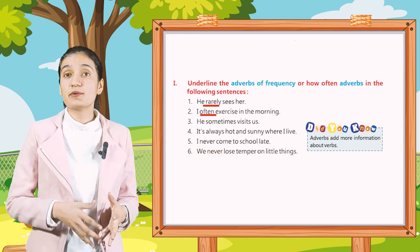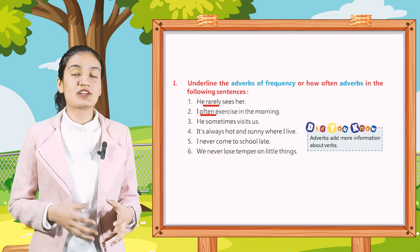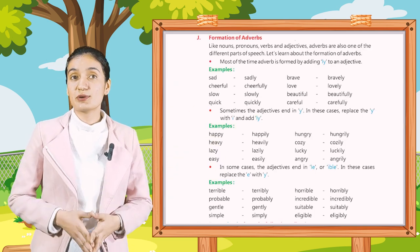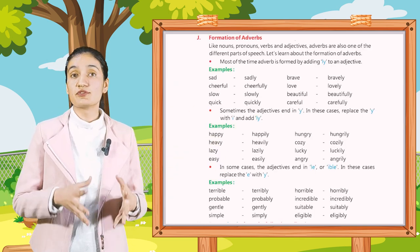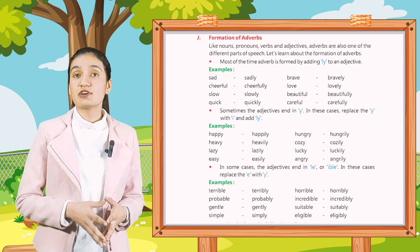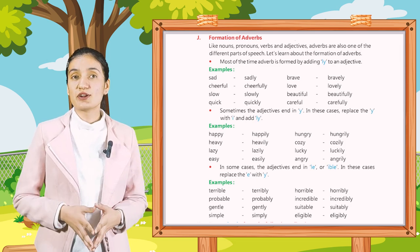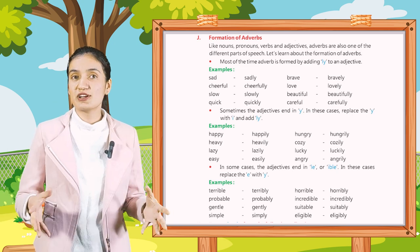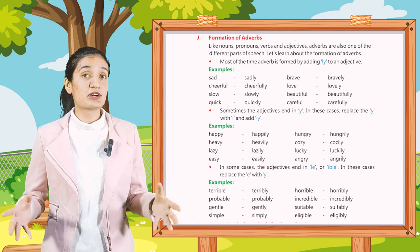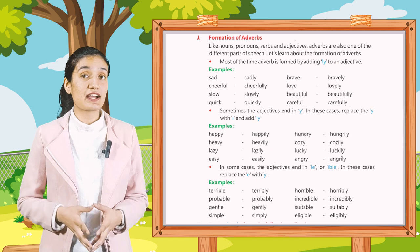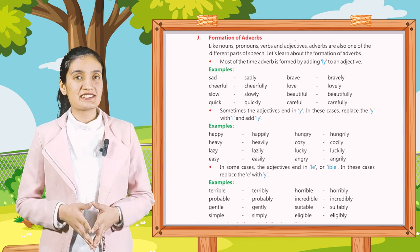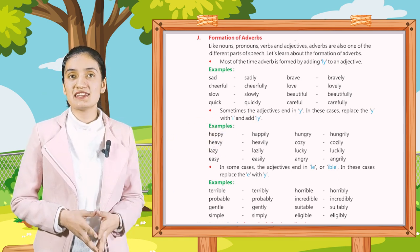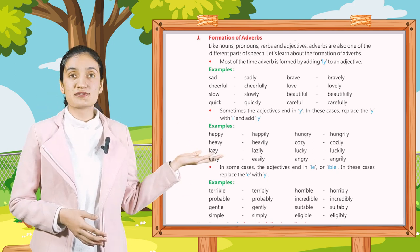Adverbs add more information about words. Part J: Formation of adverbs. Like nouns, pronouns, verbs, and adjectives, adverbs are also one of the different parts of speech. Most of the time, adverbs are formed by adding '-ly' to an adjective. Example: sad → sadly, brave → bravely.